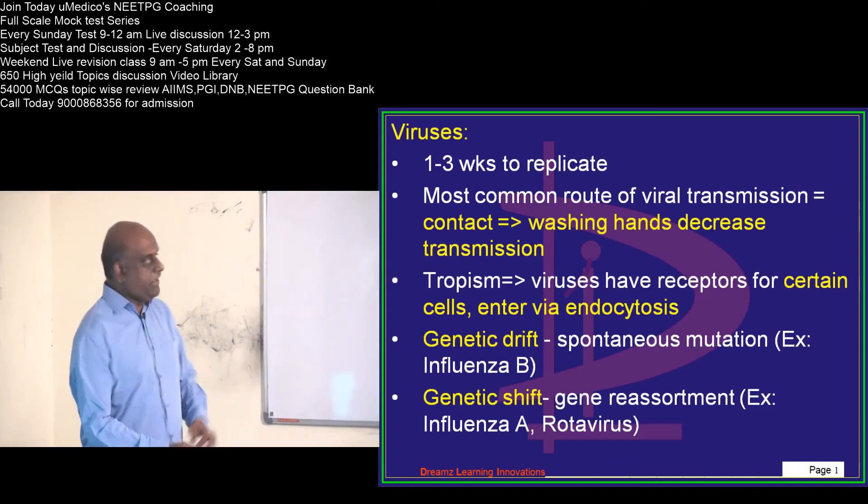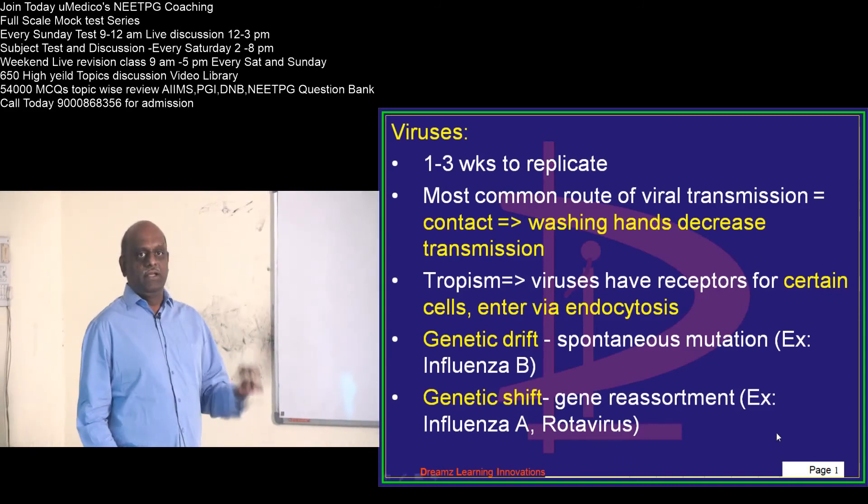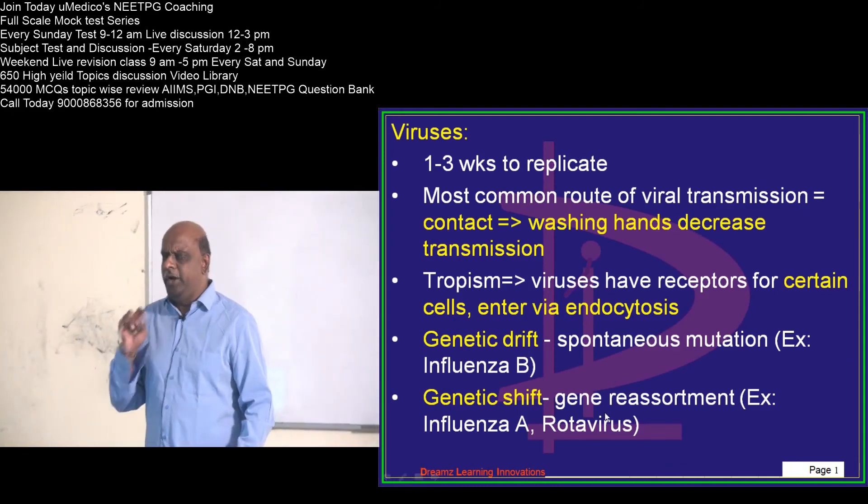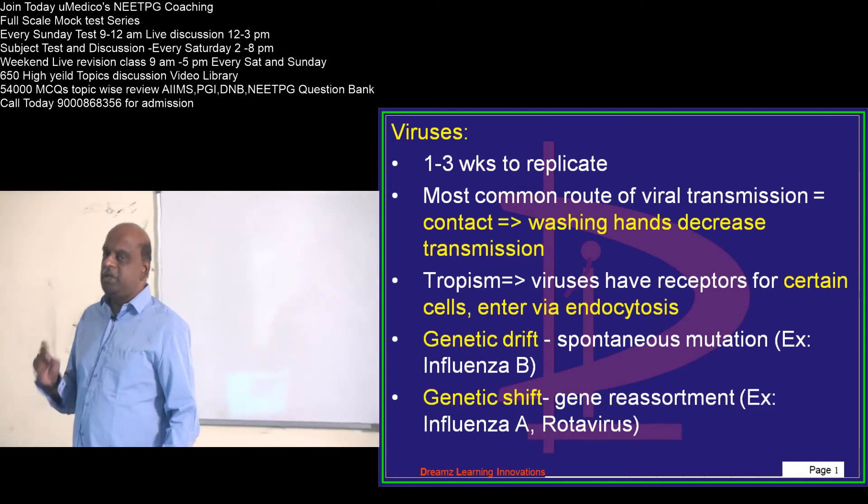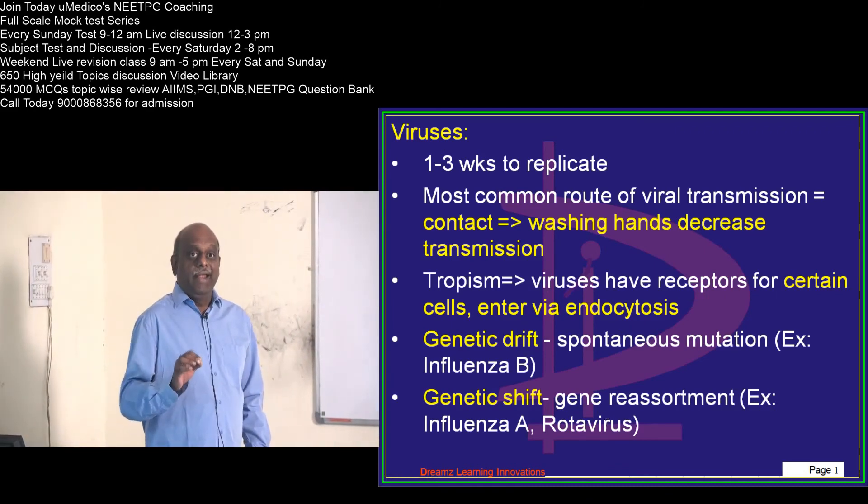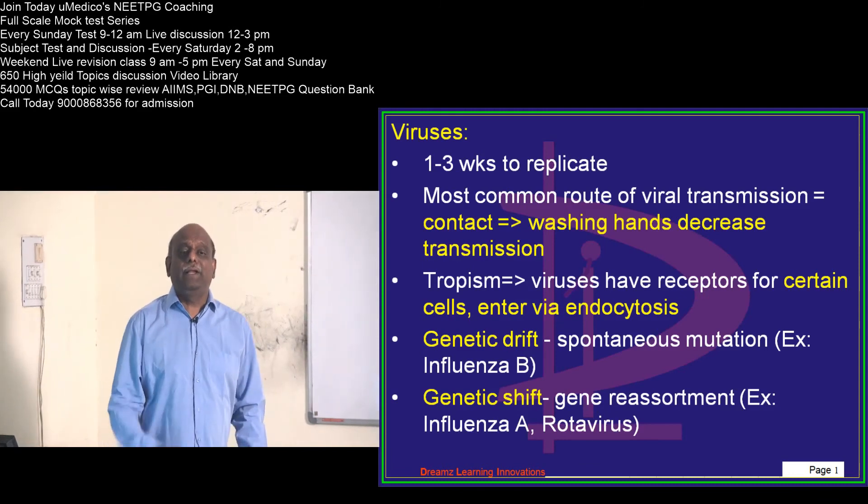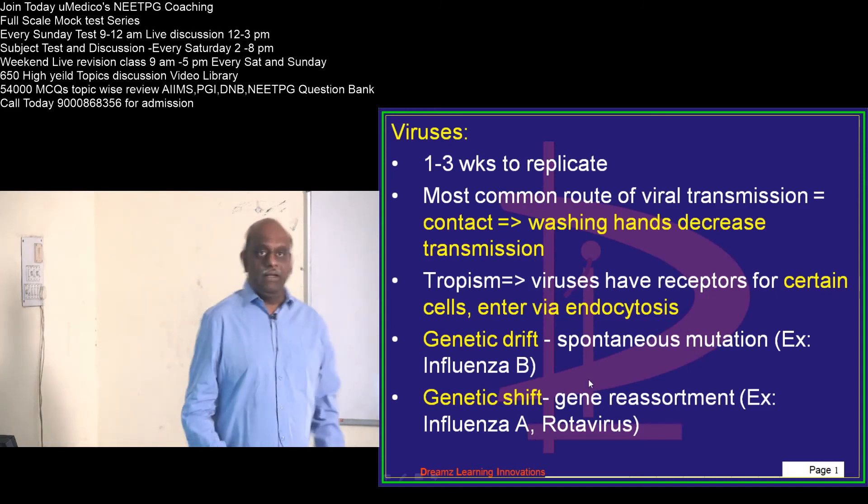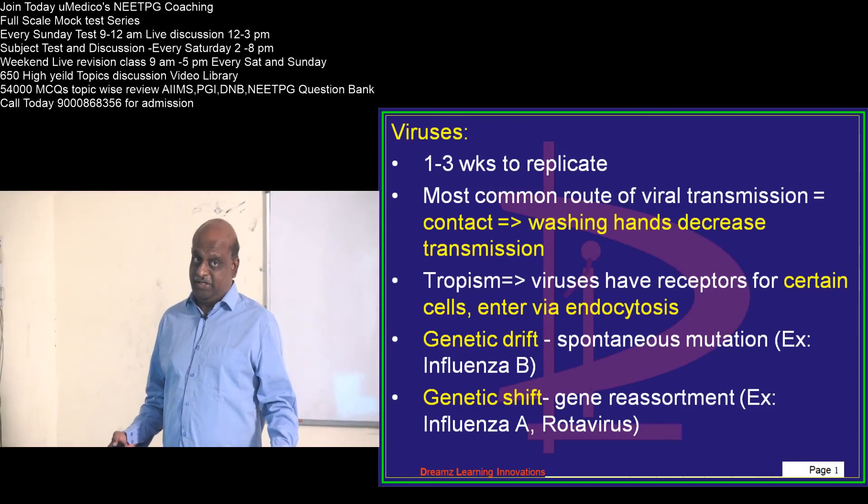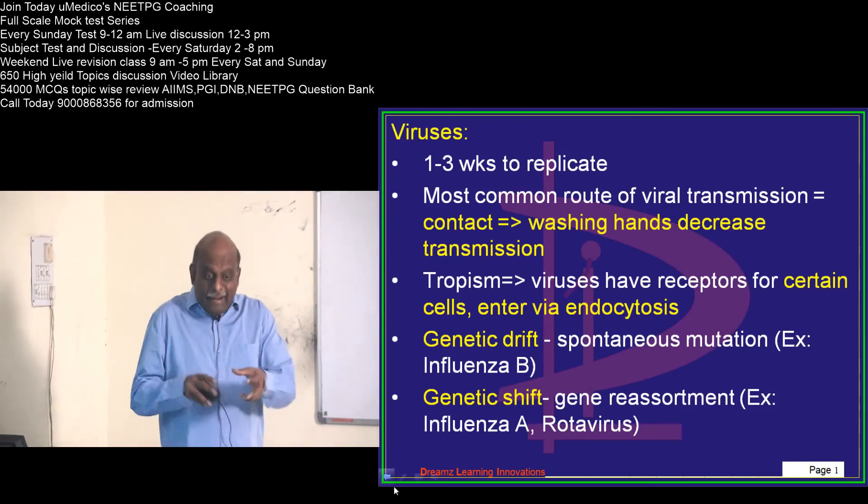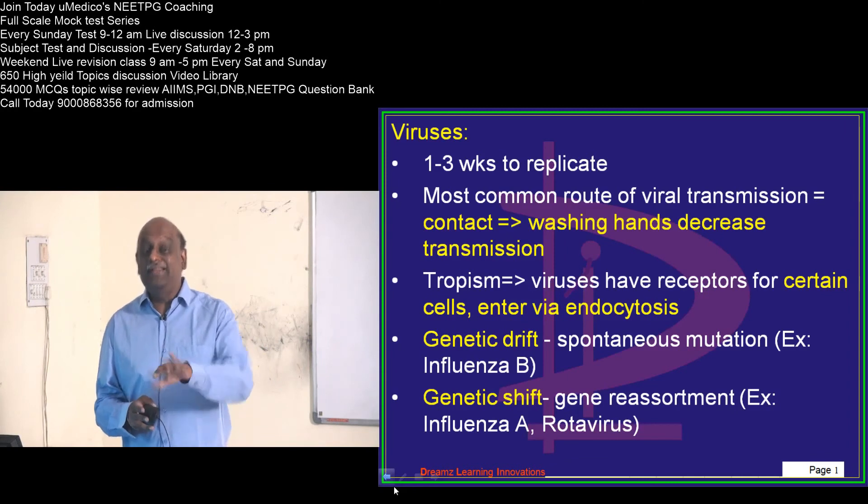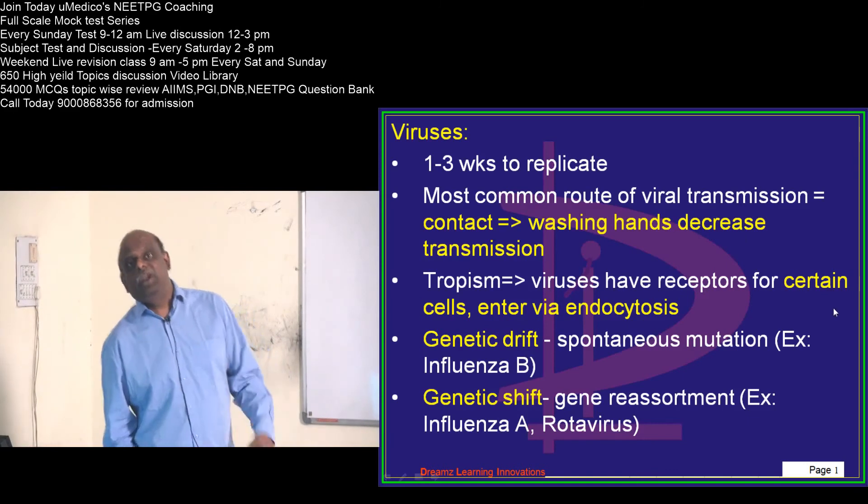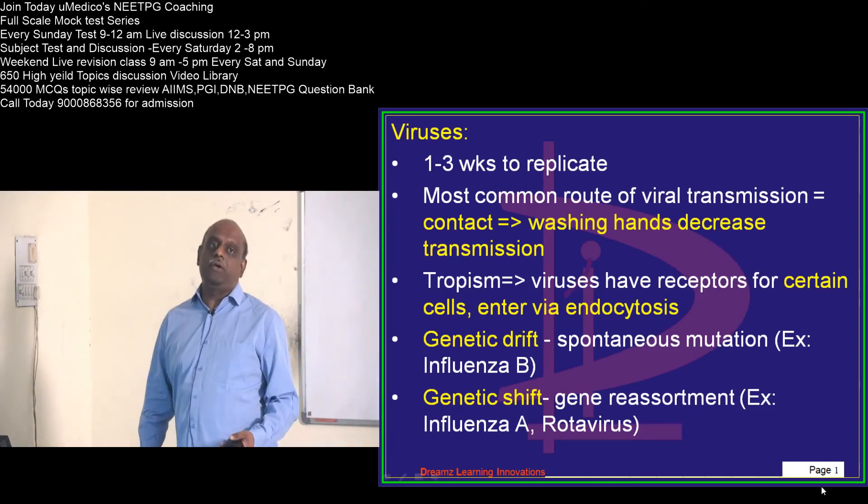Now comes an interesting concept called genetic drift and genetic shift. The main thing you need to remember for the MCQ in tomorrow's exam is that spontaneous mutations happening randomly will lead to development of genetic drift. The best example is influenza type B virus, whereas reassortment of the gene is the underlying cause for genetic shift, which you see in influenza A and rotavirus.